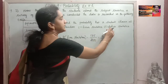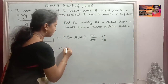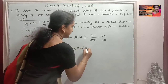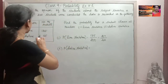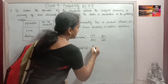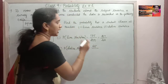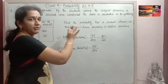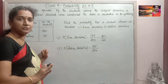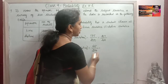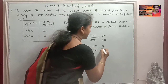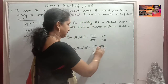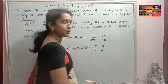The second part is dislike statistics. The probability of students who dislike statistics equals the number of students who dislike statistics, which is 65, divided by the total number of students, 200. So the probability is 65 by 200. Simplifying by dividing both by 5, we get 13 by 40.